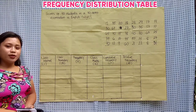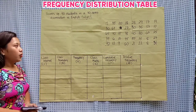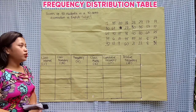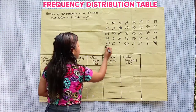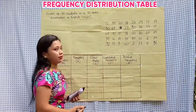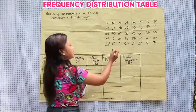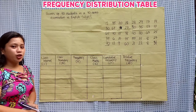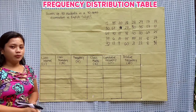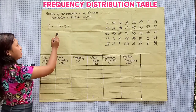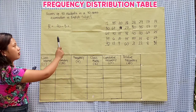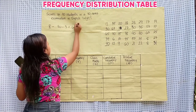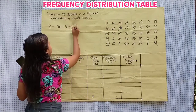So first, we need to find the range. We need to look for the highest and lowest value, which is 70 — this is our highest value — and our lowest value is 3. To find the range, we need to subtract the highest and lowest value: 70 minus 3. The result is 67. This is our range.